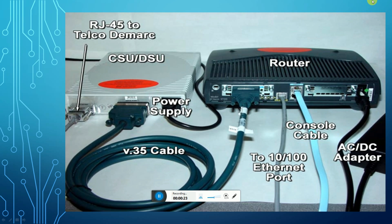This unit is the CSU/DSU. The RJ connector participates as the telecom line connector. This is the V35 cable, connecting this place and the router. The power supply is given here, with a console cable to connect the computer to the 10/100 Mbps Ethernet port. This one is the AC/DC adapter connected with the power supply.